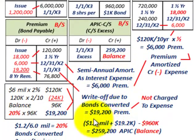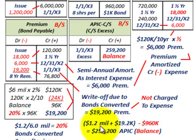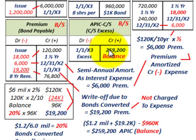Looking at the arithmetic: we have the $1.2 million payable reduction plus $19,200 premium reduction. We already allocated $960,000 to common stock par value. The difference — $1,219,200 minus $960,000 — gives us $259,200 in additional paid-in capital. That's the balancing entry.